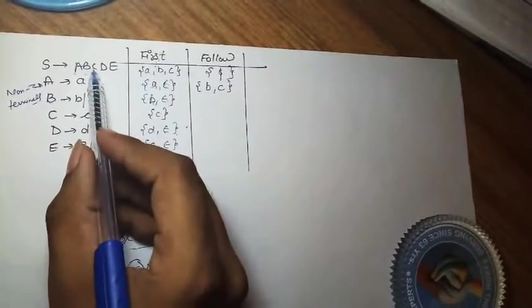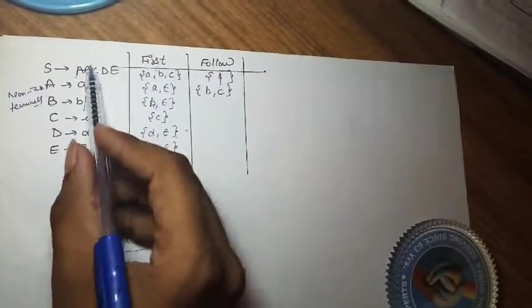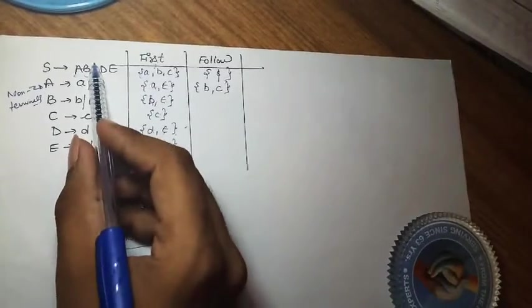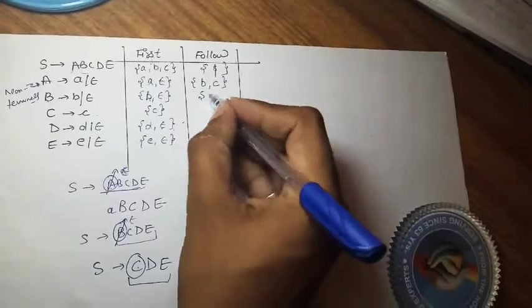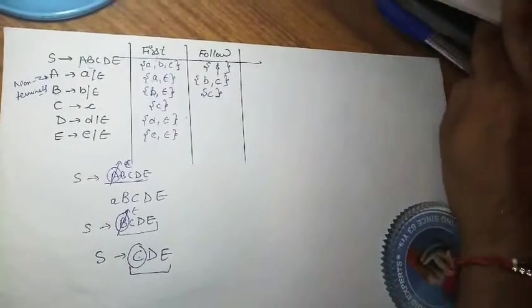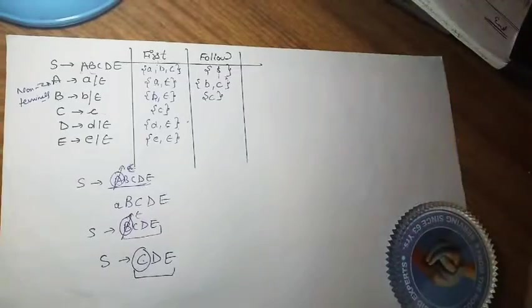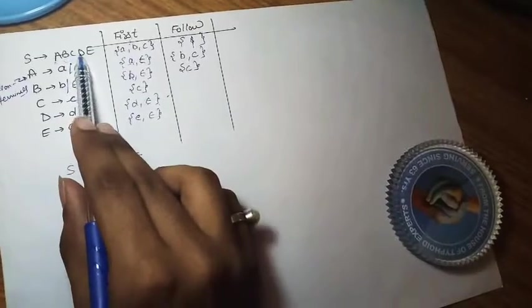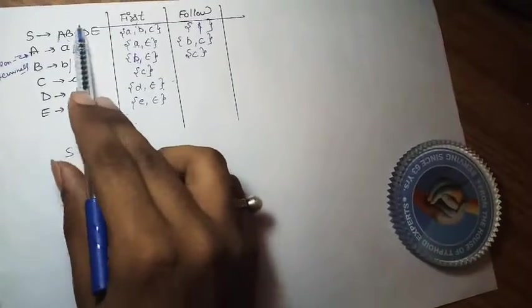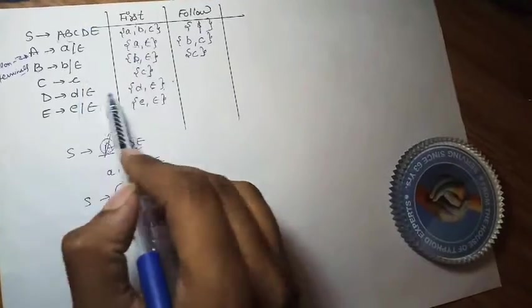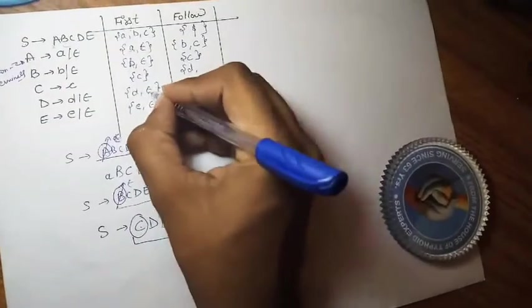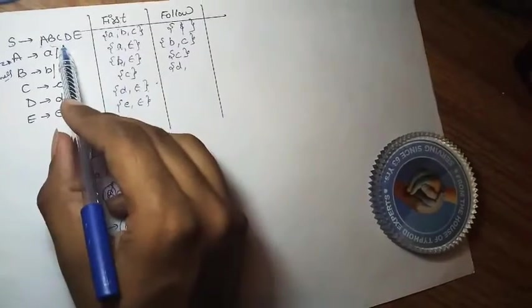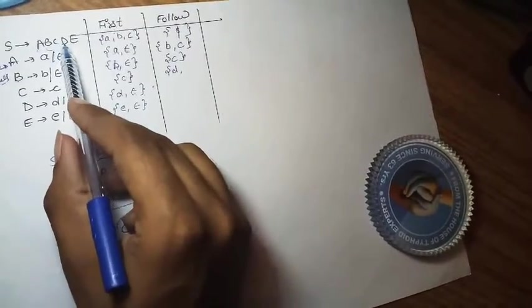For FOLLOW(B), capital B also appears in the string A B C D E. What follows B is C D E. FIRST(CDE) = FIRST(C) = {c}, so FOLLOW(B) = {c}. For FOLLOW(C), what follows C is D E. FIRST(DE) = FIRST(D) = {d, ε}. We add d. Since epsilon is in FIRST(D), D vanishes and we move to E. FIRST(E) = {e}, so we also add e. So far FOLLOW(C) includes {d, e}.